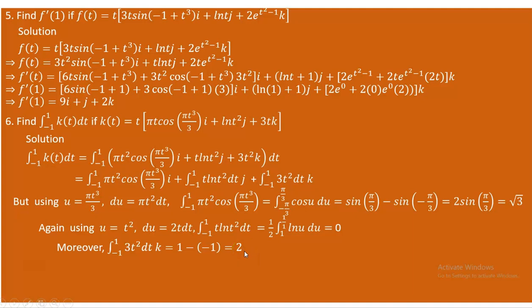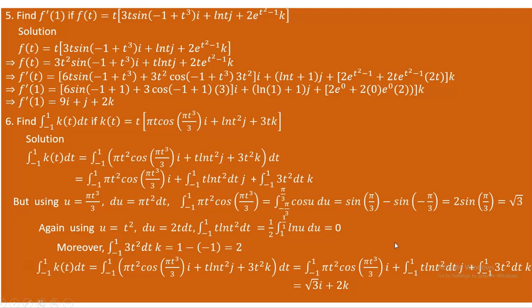Therefore, we have obtained the three scalar integral outputs. For the x component we got √3, for the y component we got 0, and for the z component we got 2. So the integral from −1 to 1 of k of t dt is √3 i plus 0j plus 2k, which simplifies to √3 i plus 2k.